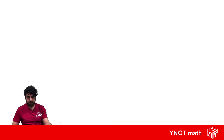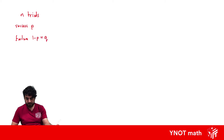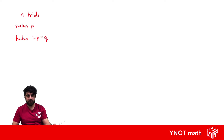For Bernoulli trials we have to have a fixed amount of trials. So let's say we have n trials, and remember we're only going off success and failure. If the probability of success is P, the probability of failure is 1 minus P, which we could call Q. All trials have to be independent of each other — think about flipping a coin: every time you flip the coin, the previous flips have nothing to do with each other.